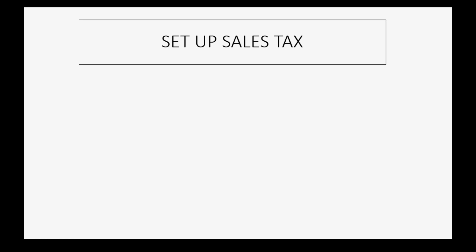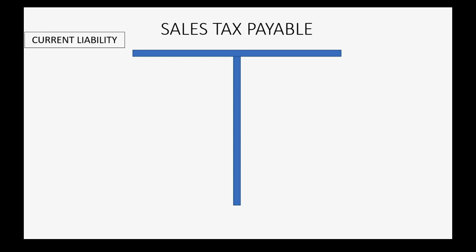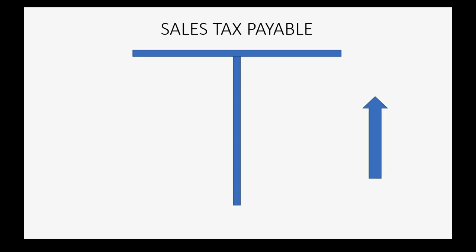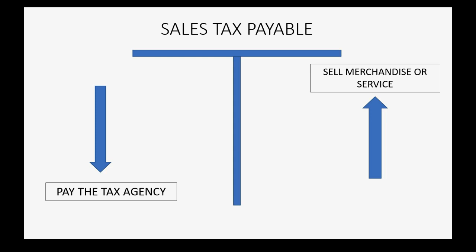Our new accounting system will be set up for sales tax. Sales tax payable is a current liability — an account equal to the total of all money owed to each tax agency as of the transfer date. It goes up when we sell taxable merchandise or services, and it goes down when we ultimately pay the tax agency for the taxes we collected from customers.